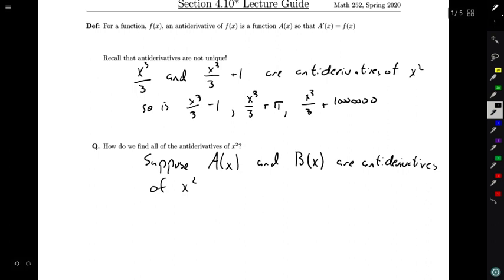Well then what we're going to notice is, let's maybe take a look at the function A(x) - B(x) for a moment. And let's think about its derivative. So the derivative of this function A - B, well that's dA/dx - dB/dx by our derivative rules. And dA/dx, since A is an antiderivative of x², its derivative is x². dB/dx, well B is also an antiderivative of x², so its derivative is x². And x² - x² is zero.